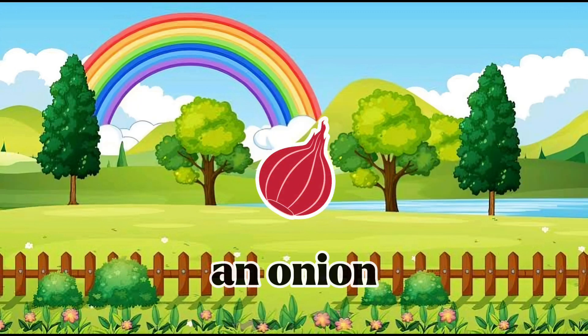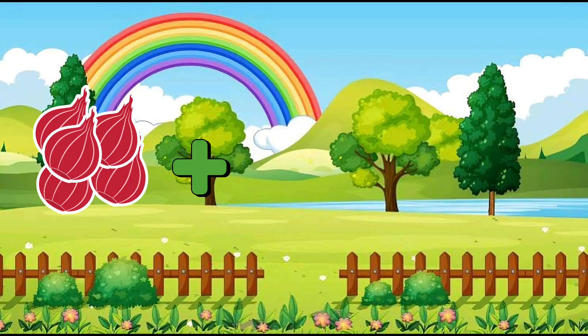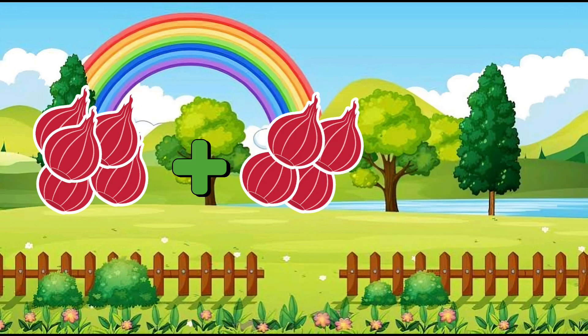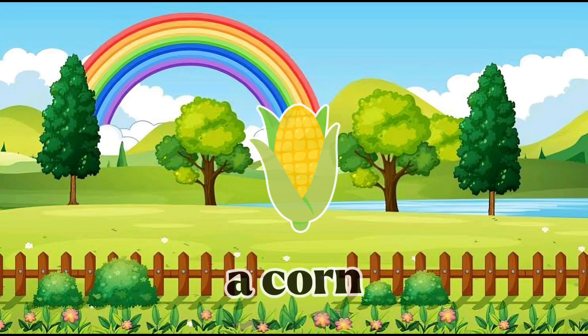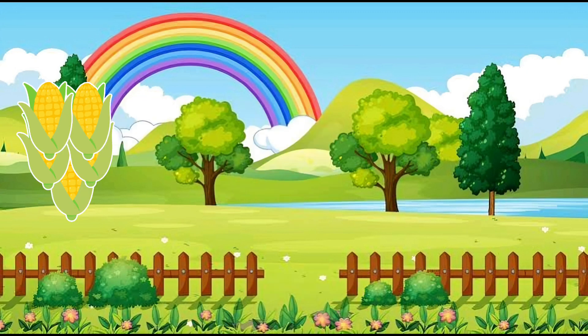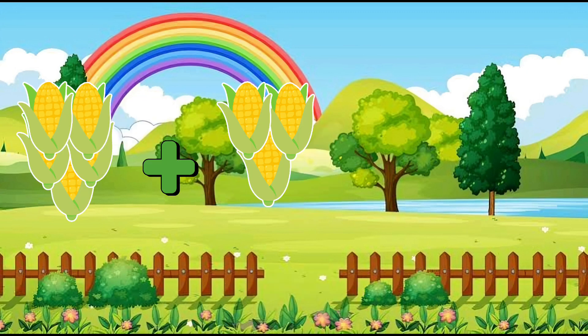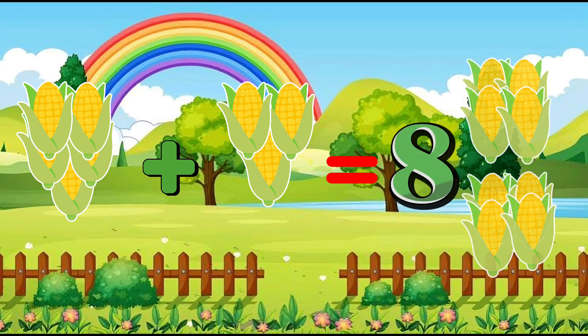An onion: five onions plus four onions equals nine onions. A corn: five corns plus three corns equals eight corns.